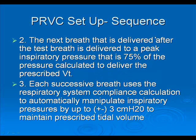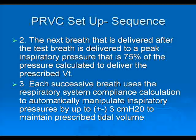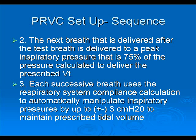In the second series, the next breath is delivered after the test breath — which was the five centimeter breath — and that's delivered to a peak inspiratory pressure that is 75% of the pressure calculated to deliver the prescribed tidal volume. That may seem complicated, but it's really not. What the ventilator is trying to achieve is a step process in order to adjust the correct pressure to get the prescribed tidal volume.